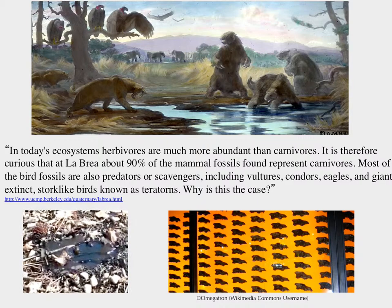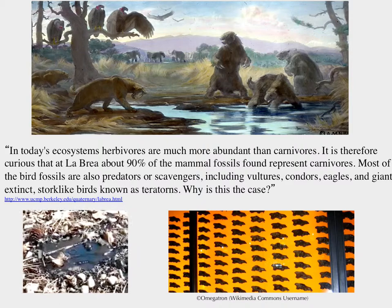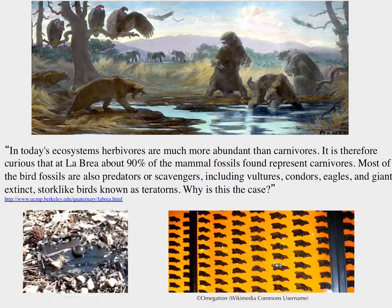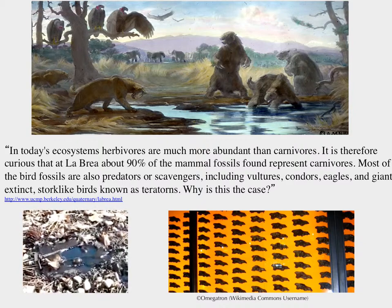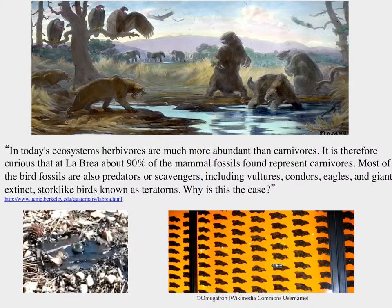Here are all dire wolf skulls pulled out of the La Brea tar pits. So a lot of wolves, fewer herbivores. Why is that? Because herbivores don't try to get stuck in the tar, but one large chunk of meat falls in, sits there, and attracts many more carnivores and scavengers, who then get stuck in the tar. So this is a bias — it comes about from how these fossils are formed and how these samples are collected, which would affect your attempts to figure out what the paleoecology was.